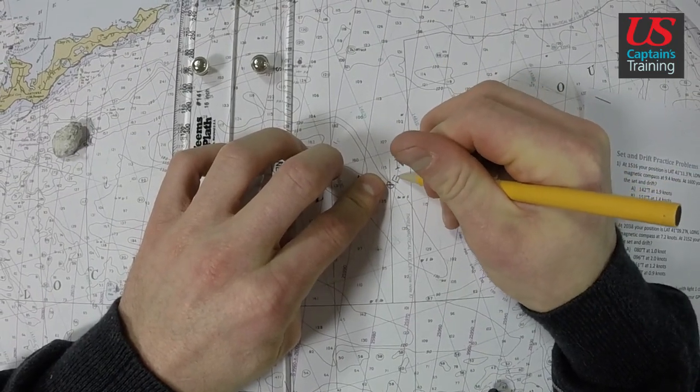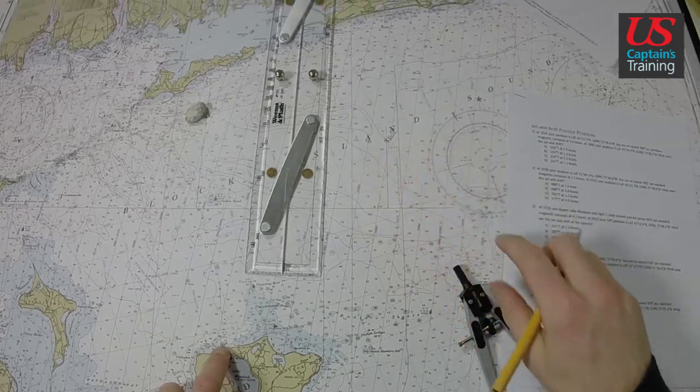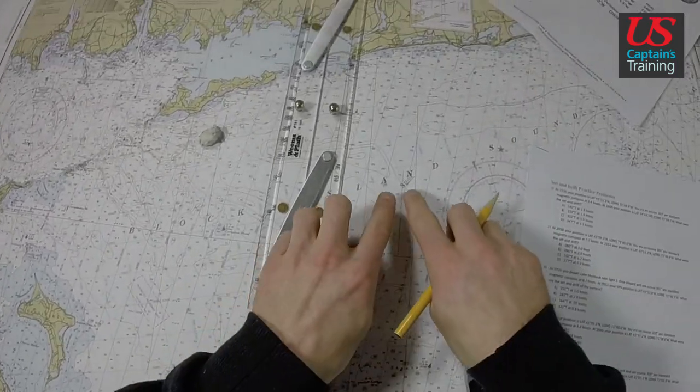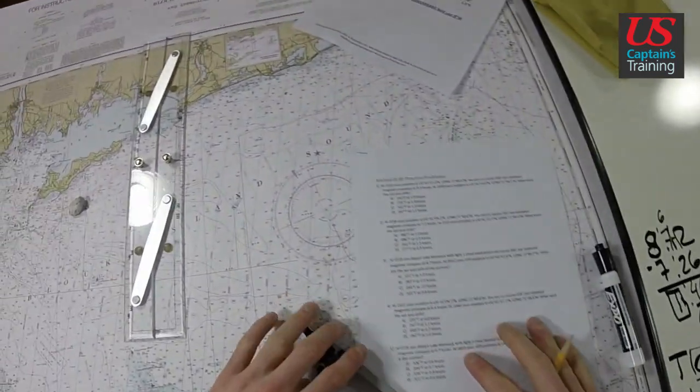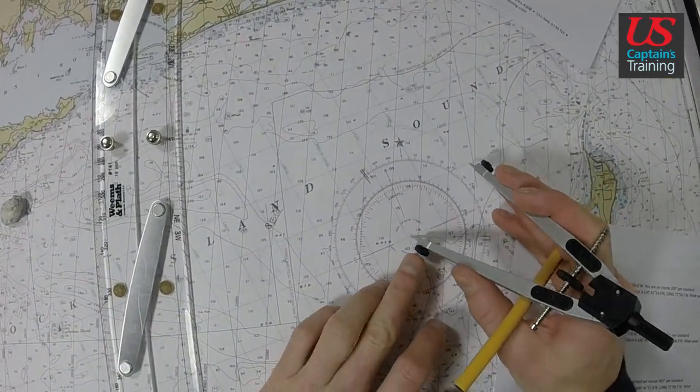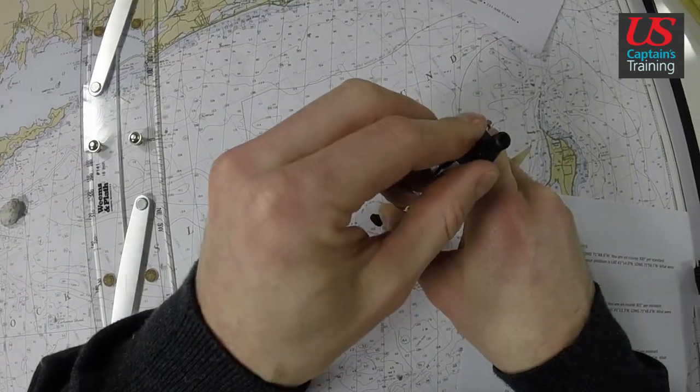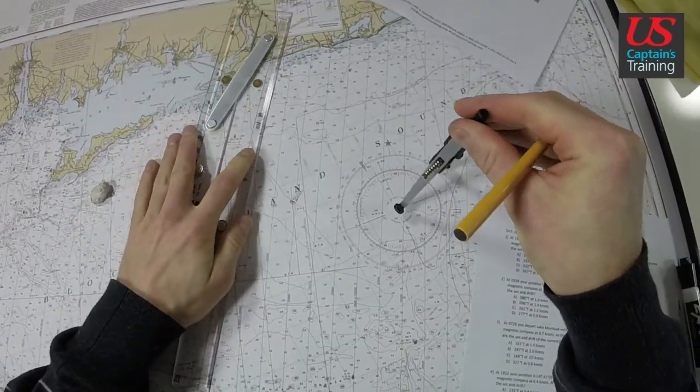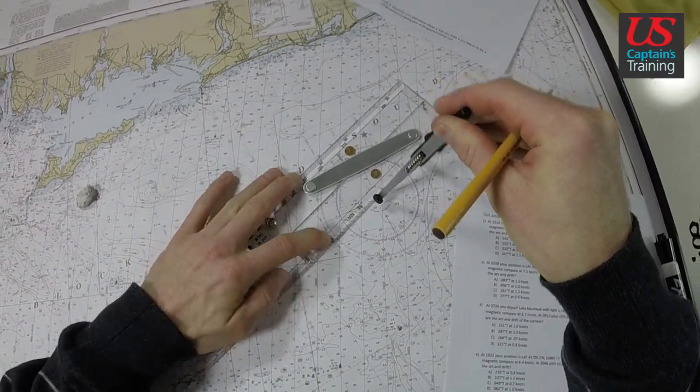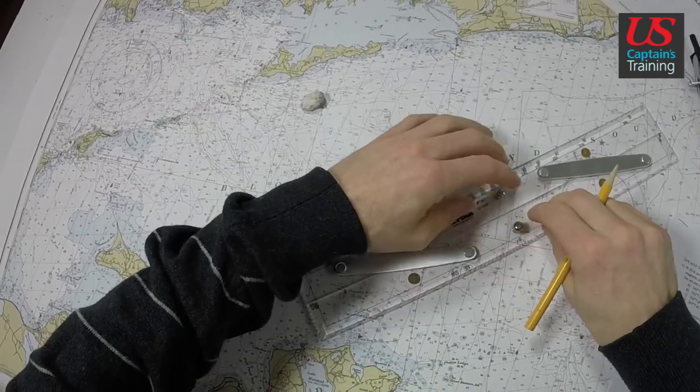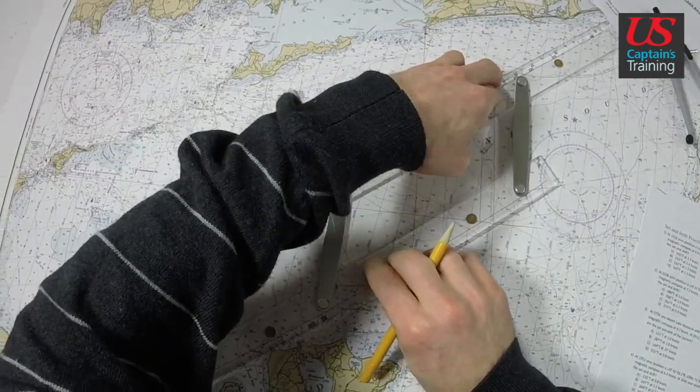This is our end. Remember we start at Lake Montauk, we went towards the end. So we started here, we actually ended up here. Our intended course was 054. We get that, 054. Line her up and strike a line.